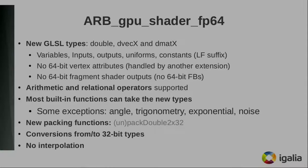Other than that, we support arithmetic and relational operators as we do with normal floats. Most built-in functions in GLSL also accept double types, with some exceptions. There are also new packing and unpacking functions for doubles, and conversions from/to 32-bits. One special thing about 64-bit is that varyings don't accept interpolation, so you need to declare them as flat.